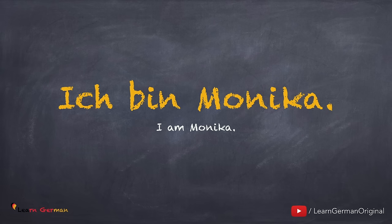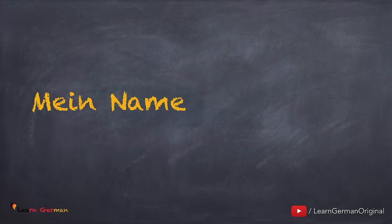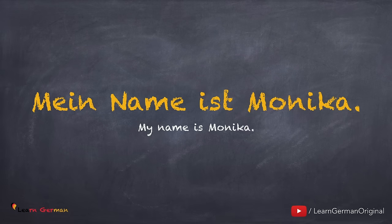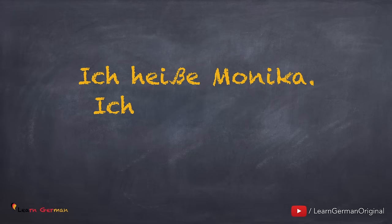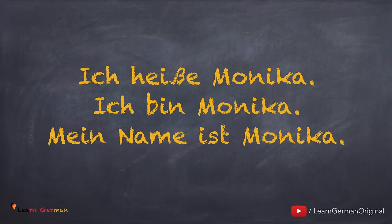This sentence is generally used amongst friends. A formal way to say your name is: Mein Name ist Monika. Noch einmal. Mein Name ist Monika. Now let's put together all three ways of saying your name: Ich heiße Monika. Ich bin Monika. Mein Name ist Monika.